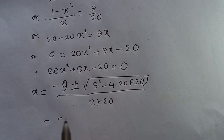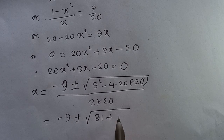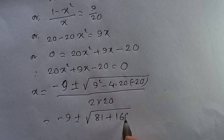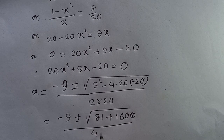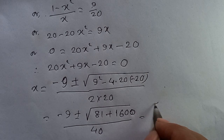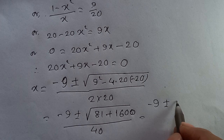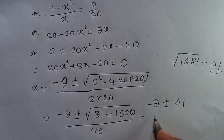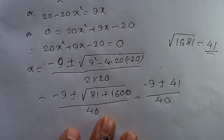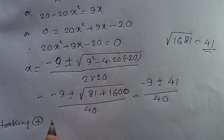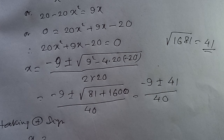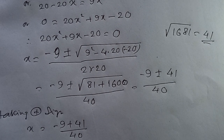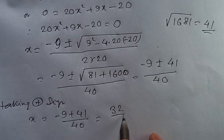Then x equals minus 9 plus or minus root over 81 plus 4 times 2 times 2. This equals root over 1681, which equals 41. So x equals minus 9 plus or minus 41, all over 40. Taking the positive sign, x equals minus 9 plus 41 over 40, which equals 32 by 40.